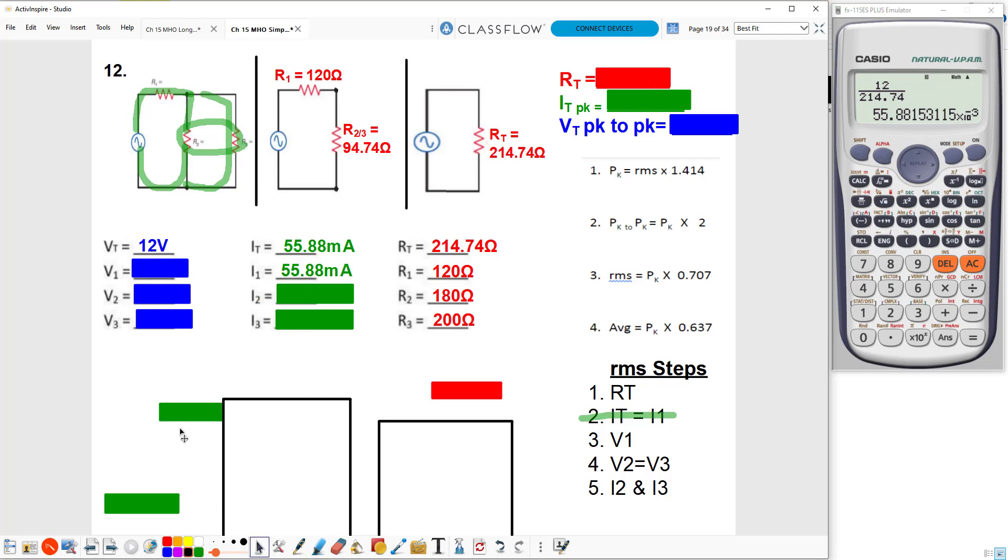Now I've got two out of three for V1, so I take the 55.88 milliamps times 120 ohms, and that gives me a V1 value of 6.71 volts. V2 and V3 will be the same, but they cannot both be 12 volts because I've already dropped 6.71 volts at V1. So I simply subtract the 6.71 volts from the 12 volts, and that gives me the value of both V2 and V3 using this equation.